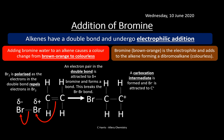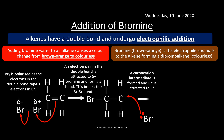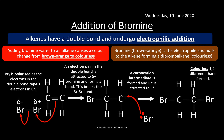The carbocation intermediate is then attacked by the Br⁻ ion using its lone pair. Curly arrows always show the direction of electron transfer. Finally, 1,2-dibromoethane is formed — a colourless product. That's the traditional electrophilic addition mechanism for alkenes. However, the reactions of arenes are different because of their delocalized electrons.